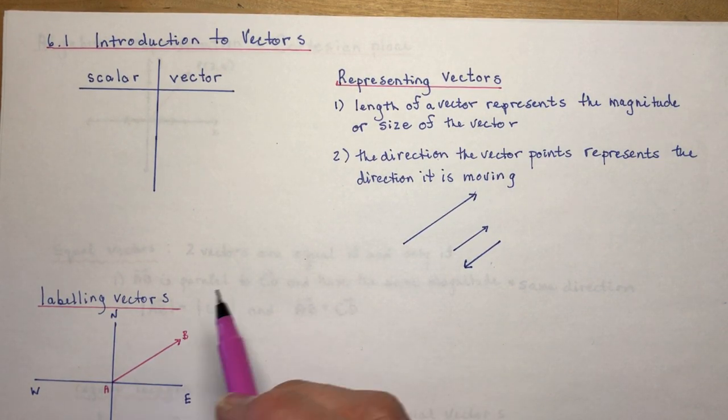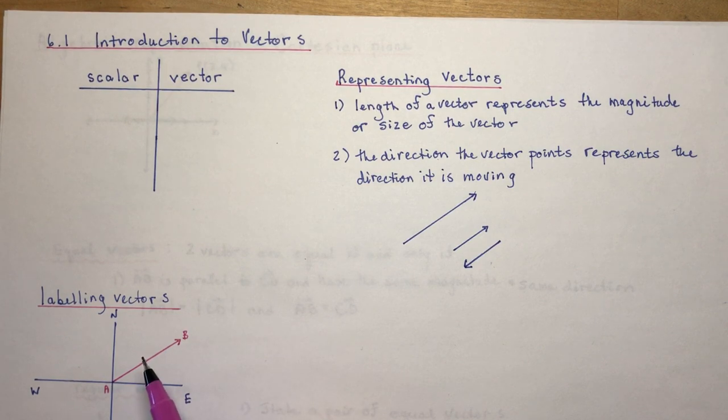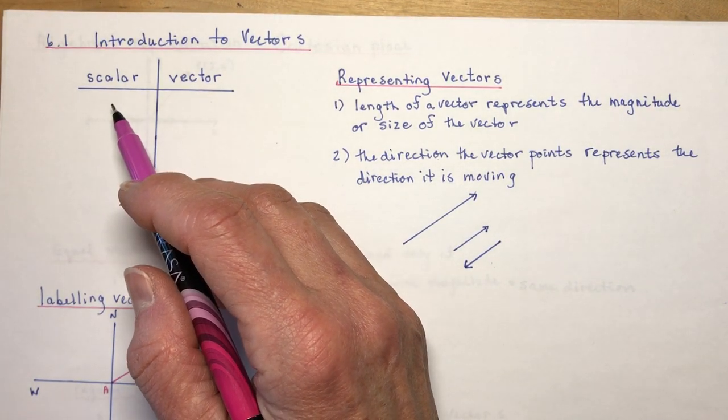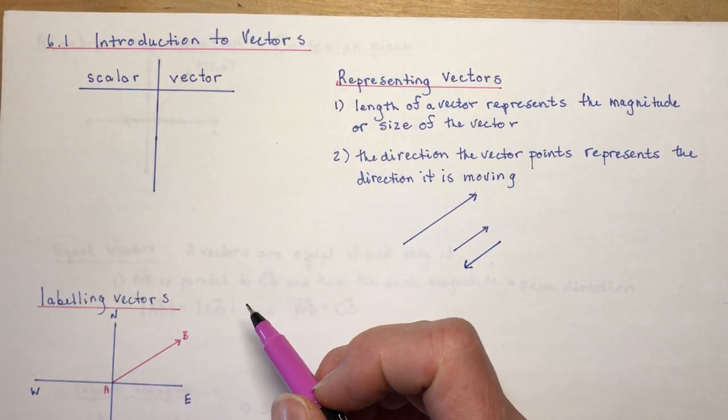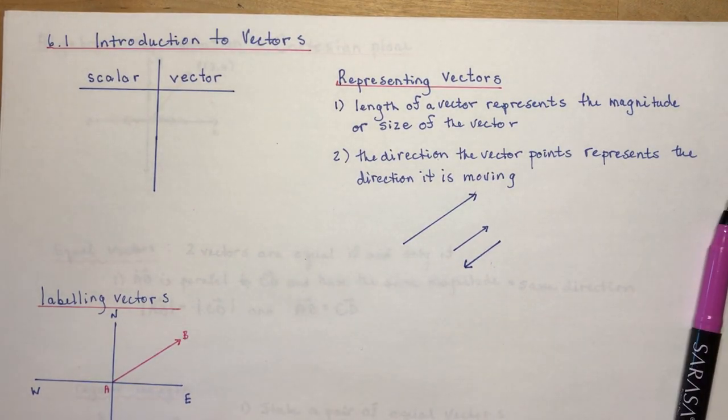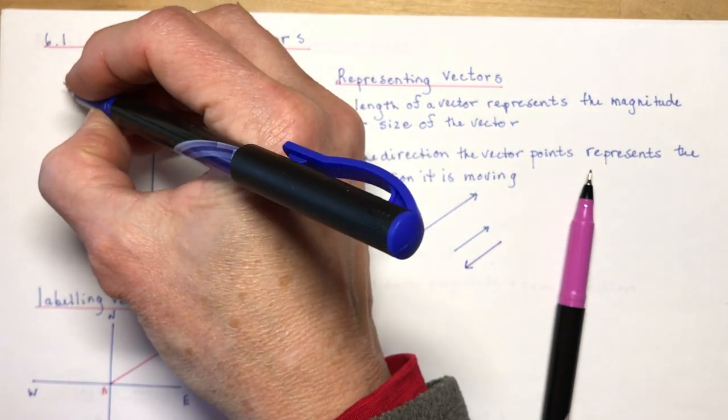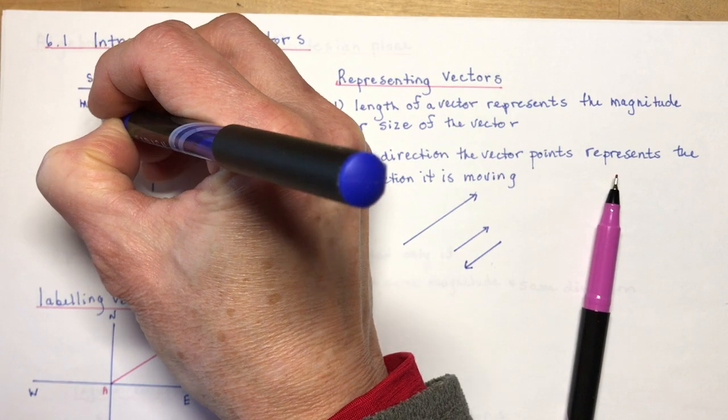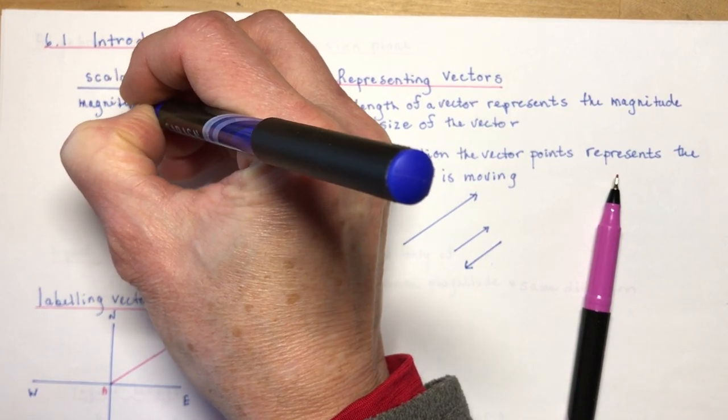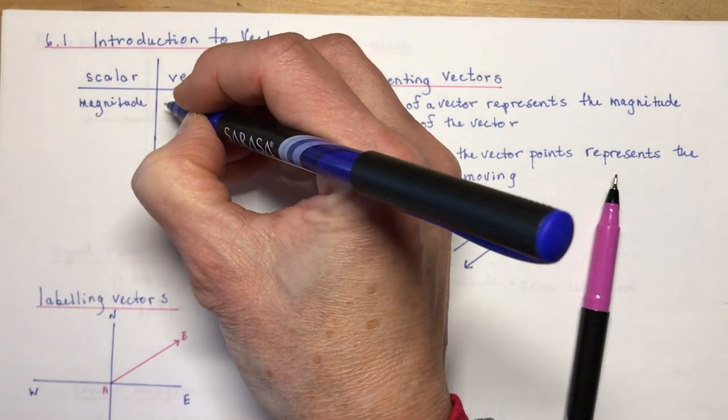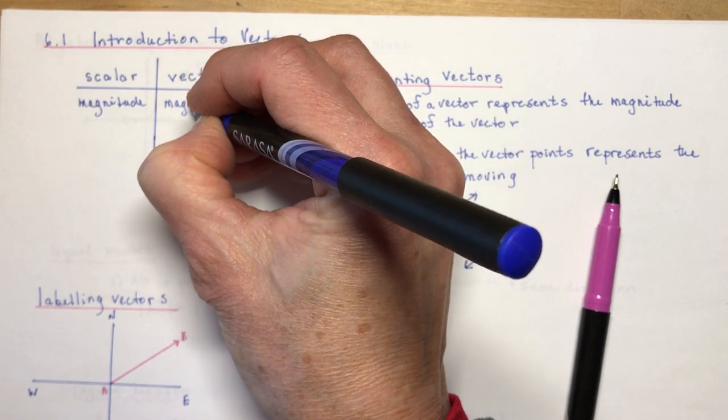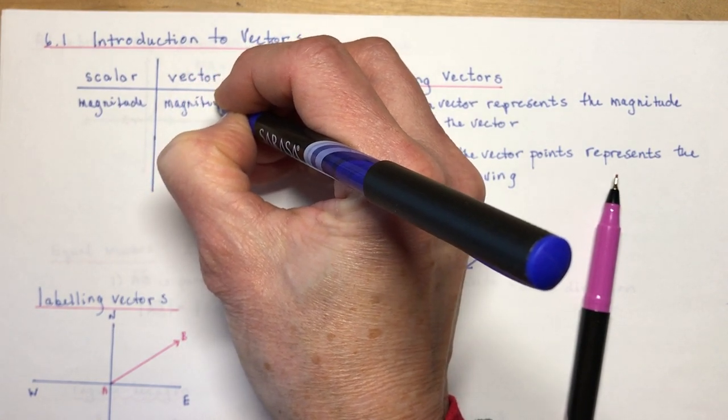So when we talk about vectors we talk about different ways of measuring things to start with. We talk about scalar measurements and we talk about vector measurements. So the difference between the two is that a scalar has just magnitude, and a vector has magnitude and direction.